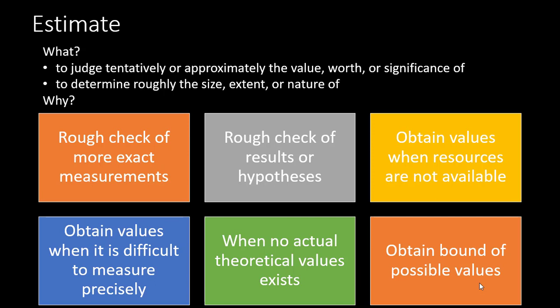So, why do we do it in science? What prompts us to use estimate instead of the actual measurement? At times, estimation is carried out in order to give a rough check of more exact measurement — in the sense that we want to be sure that what we have gotten is actually within what is actually possible. Estimation gives us a rough check of more exact measurement, and it could also help us to do a rough check of a result or hypothesis.